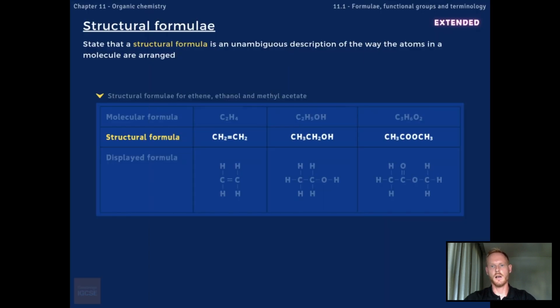Structural formulae are similar to displayed formulae, in that they show how the atoms in a molecule are arranged, but unlike displayed formulae, single covalent bonds are omitted. Only significant bonds like double and triple bonds are displayed. For example, the structural formula of the alkene ethene depicts two CH2 or methylene groups joined together by a double bond. The structural formula of ethanol depicts a CH3 or methyl group attached to a CH2 attached to an OH, which is the functional group of alcohols.